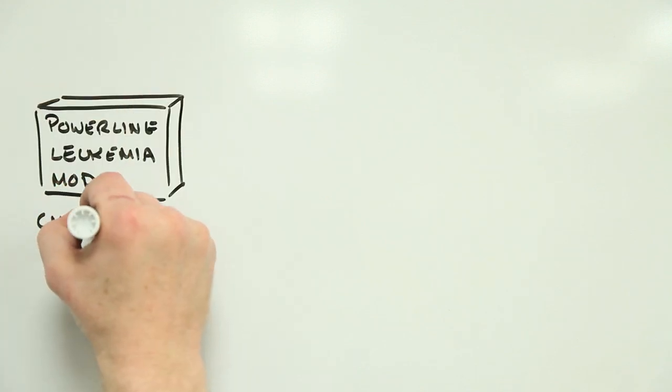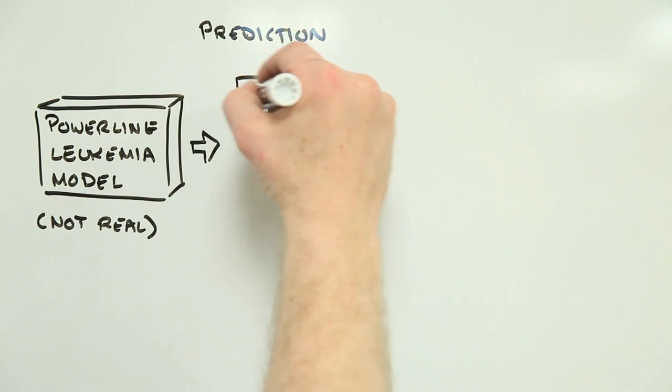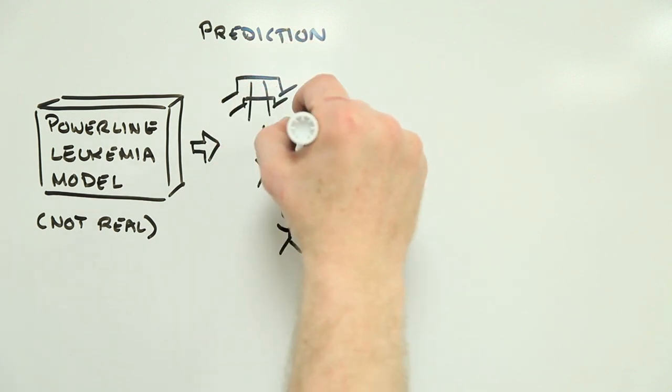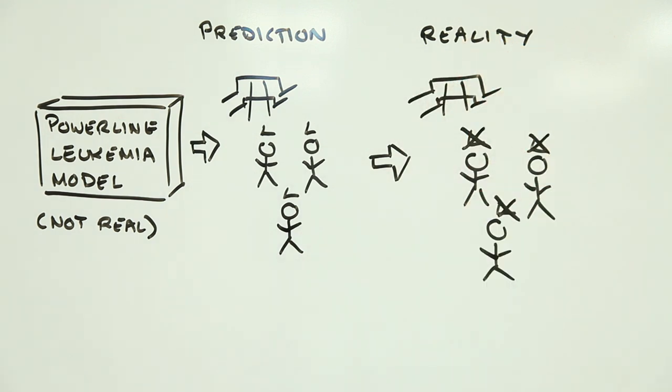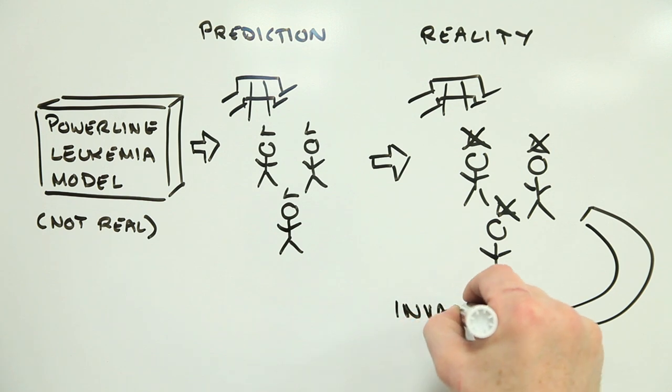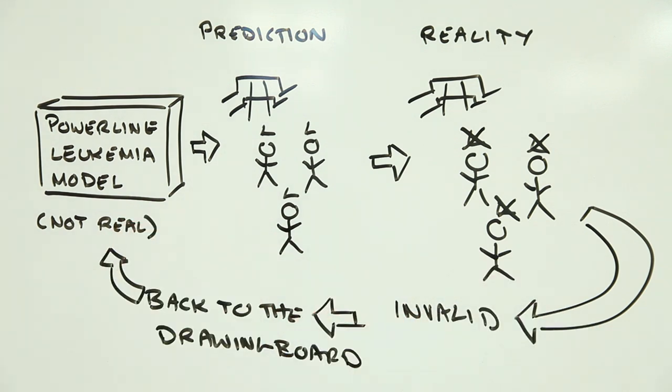Imagine that a child living next to a power line tragically develops leukaemia. It's easy to build a model that associates the power line to the disease. But until that model has successfully predicted other confirmed cases of leukaemia under similar circumstances, it remains a fantasy. Until it is validated, it is invalid and potentially very dangerous if misused.